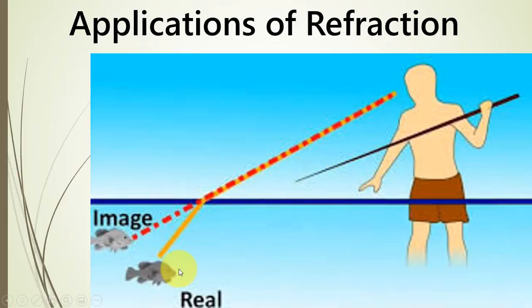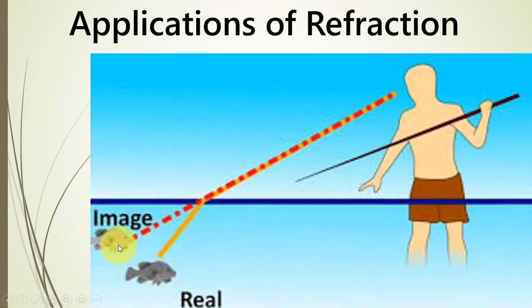Consider this example: a hunter is hunting a fish, so he will have to account for the bending of light. He will have to aim slightly above and slightly away from the fish. This can be calculated — how much distance is to be kept in order to hit the fish at the right place. This bending of light must be accounted for before taking the shot.